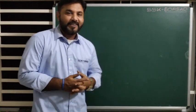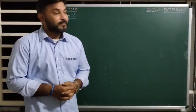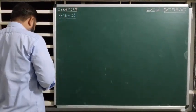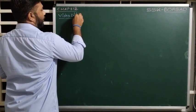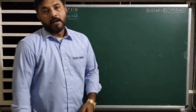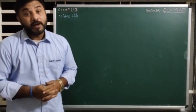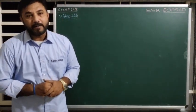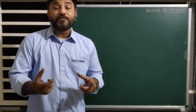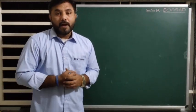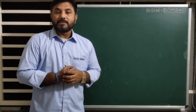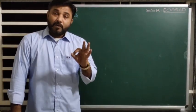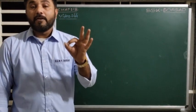Hello friends, today we will see chapter number 12, video number 44. In the last two videos we have seen Rutherford's experiment, and from that experiment there was a concept of the nucleus. Electrons are revolving around the nucleus in a circular path — this was according to Rutherford's atomic model.